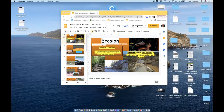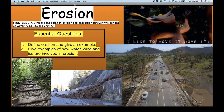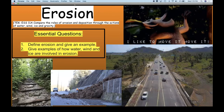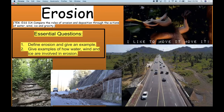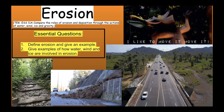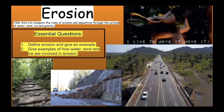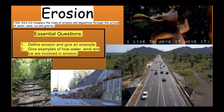Hello, my name is Miss Ramirez. In this segment we're going to learn all about erosion. I have two essential questions: first, define erosion and give an example; second, give examples of how water, wind, ice, and/or gravity are involved in erosion. Erosion is simply the movement of sediment. Weathering is the breakdown; erosion is the next step when that sediment moves.